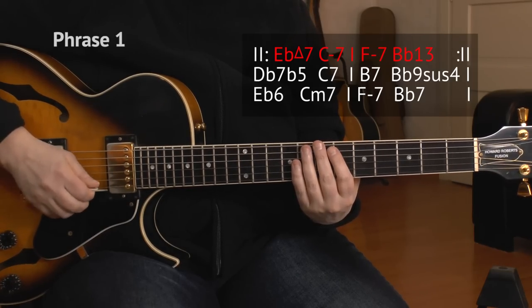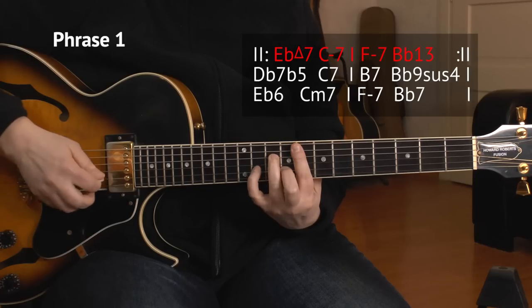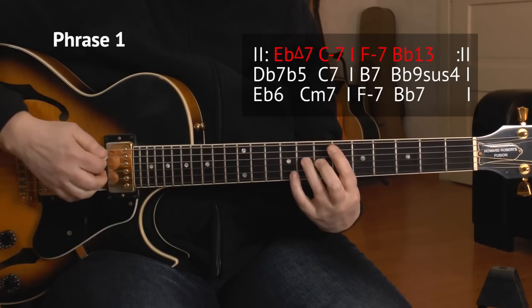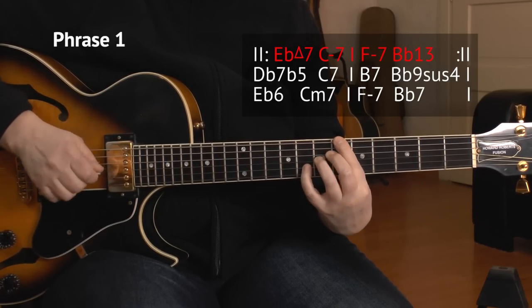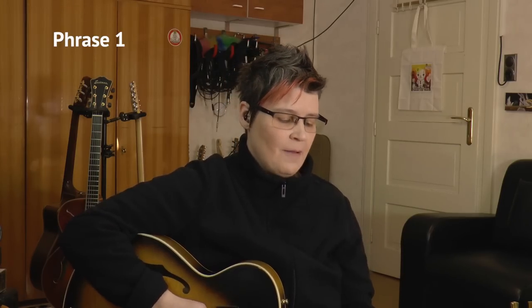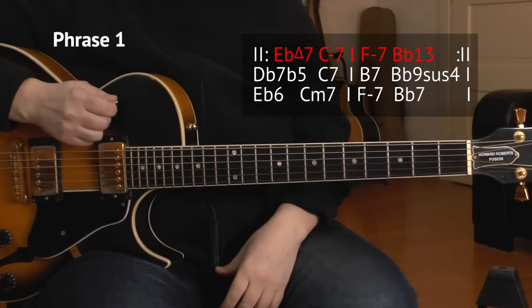Here's phrase number 1, and these are the first 4 bars of the A-1 section. We are in the key of E-flat, as I mentioned before, and we have a 1-6-2-5 progression going on. This is E-flat major, C minor, F minor, and B-flat dominant.